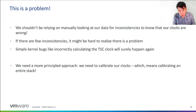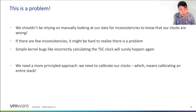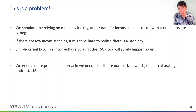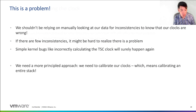Overall, this is an issue. We shouldn't be relying on manually looking at our data for inconsistencies to know that our clocks are wrong. If there are only a few inconsistencies, it might be really hard to realize there's a problem in the first place. Simple kernel bugs incorrectly calculating the TSC will definitely show up again, especially with all the SoCs that are appearing. So we need a more principled approach — we need to calibrate our clocks, and that involves calibrating the entire stack.